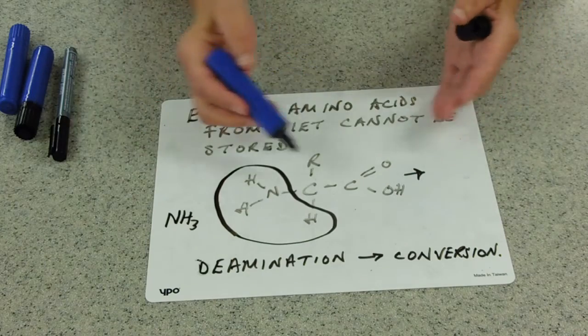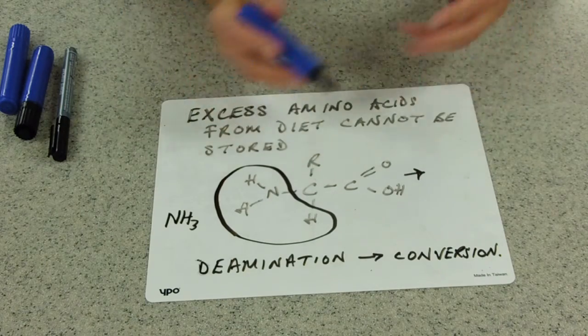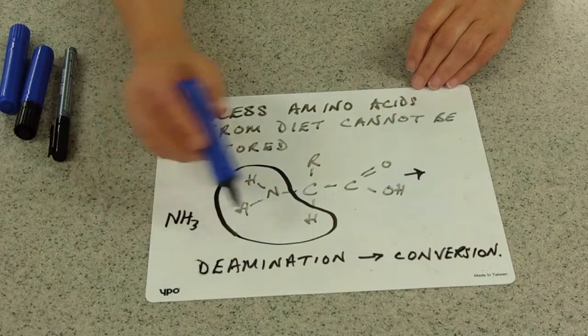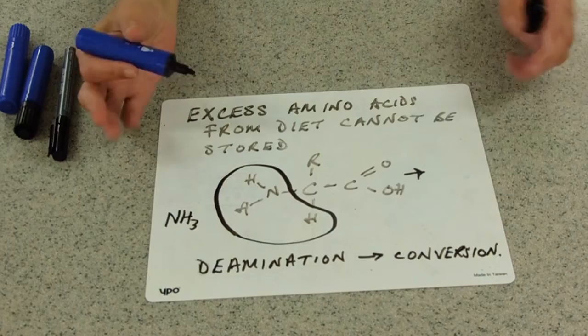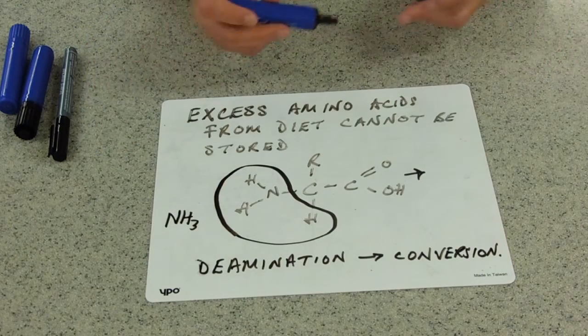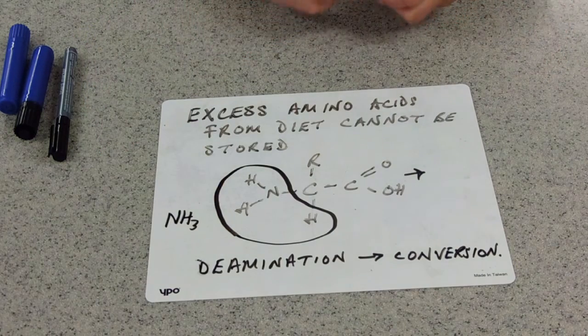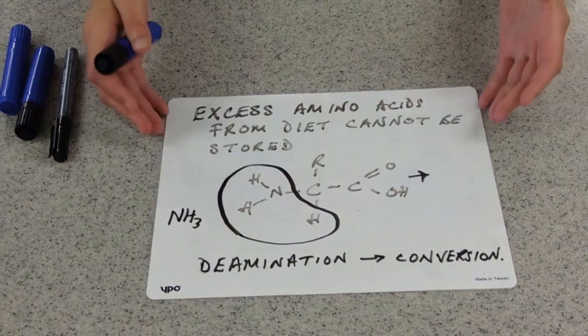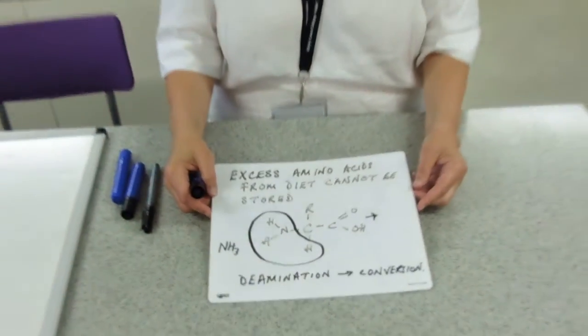So this deamination, you need to know that term means removal of ammonia. And then the rest of the molecule can then be respired. What happens to the ammonia then is it's converted and in mammals it's converted to urea which circulates from the liver, round through the bloodstream and off to the kidney to be cleared away from the blood.